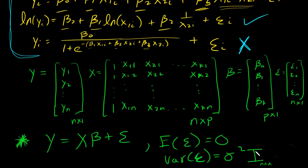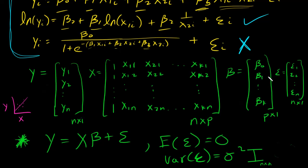Before finishing, I want to talk about interpreting the beta terms. It's not as straightforward as when we had one predictor variable. Back with simple linear regression we could plot x and y and say beta_1 is basically the slope. With more than one predictor variable it gets more complicated, because you have to hold all the other x's constant while interpreting each individual beta. These are called the partial regression coefficients.